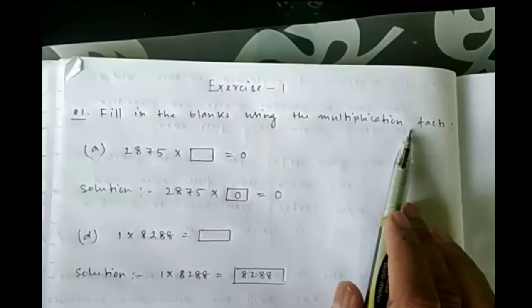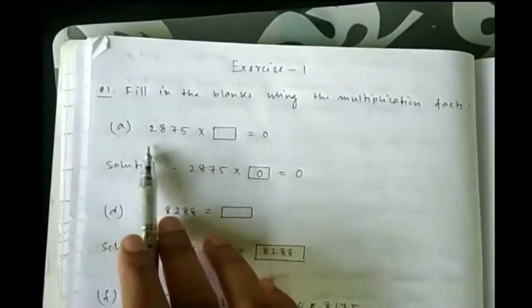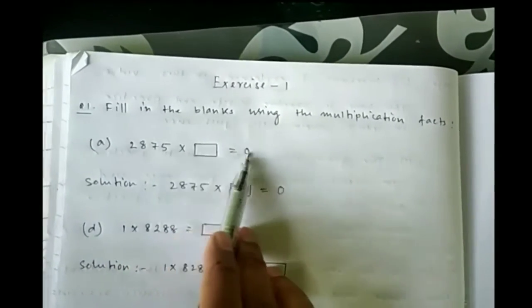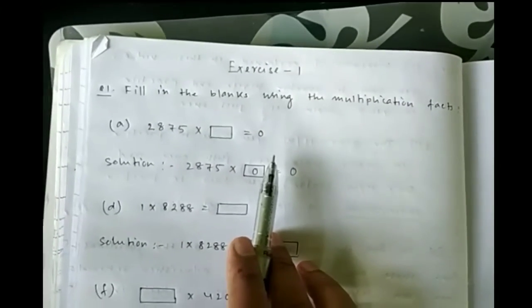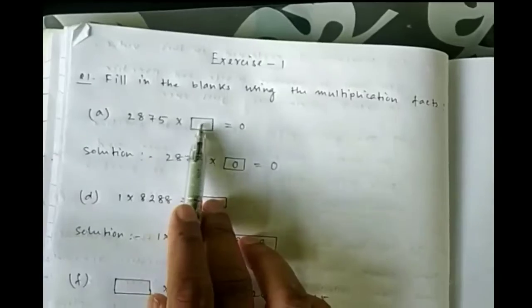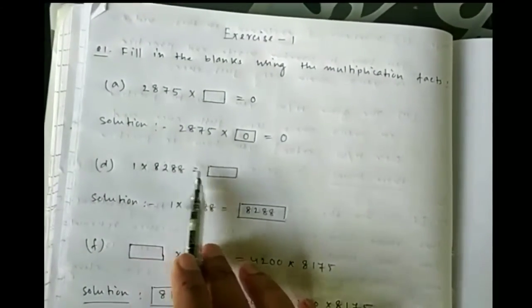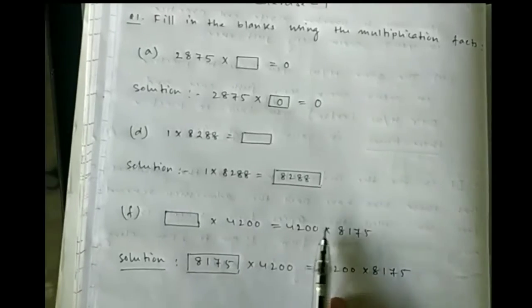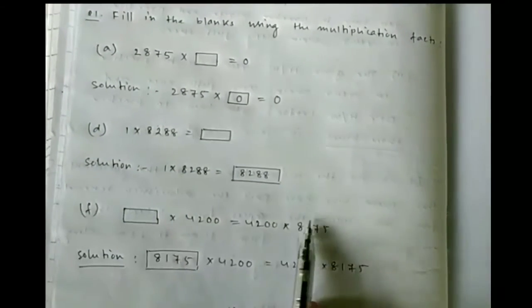Let's start exercise 1. First question: fill in the blanks using multiplication facts — that is, multiplication properties. First: 2875 into dash is equal to dash. This falls under the second property, multiplicative property of 0 — anything into 0 is equal to 0. Number d: 1 into 828 is equal to what? This falls under the first property, multiplicative property of 1 — 1 into anything is equal to that number. Number f: dash into this equals this into this — this is the commutative property of multiplication, so we write 8175.